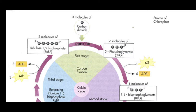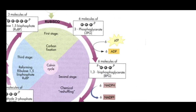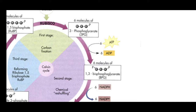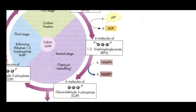After 3-PGA is formed, the molecule enters chemical reshuffling. First, ATP is added to 3-phosphoglycerate, forming 1,3-bisphosphoglycerate — a stable intermediate with two phosphate groups. Then a reduction step occurs where NADPH donates hydrogen, converting 1,3-bisphosphoglycerate into glyceraldehyde-3-phosphate (G3P). Both ATP and NADPH used here come from the light reactions in the thylakoid.